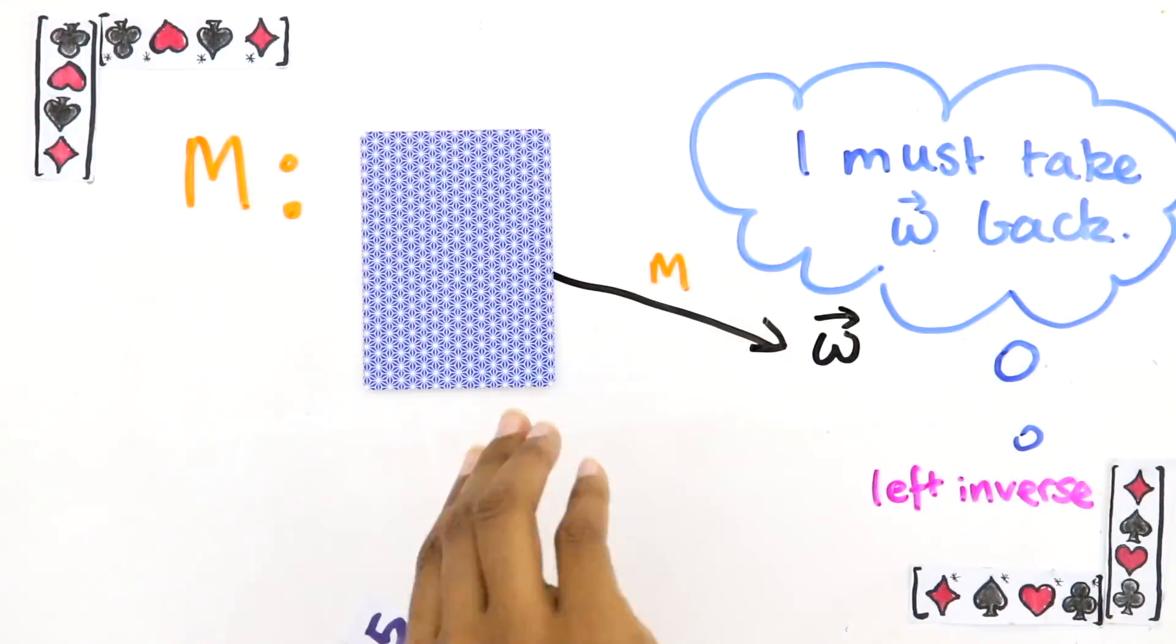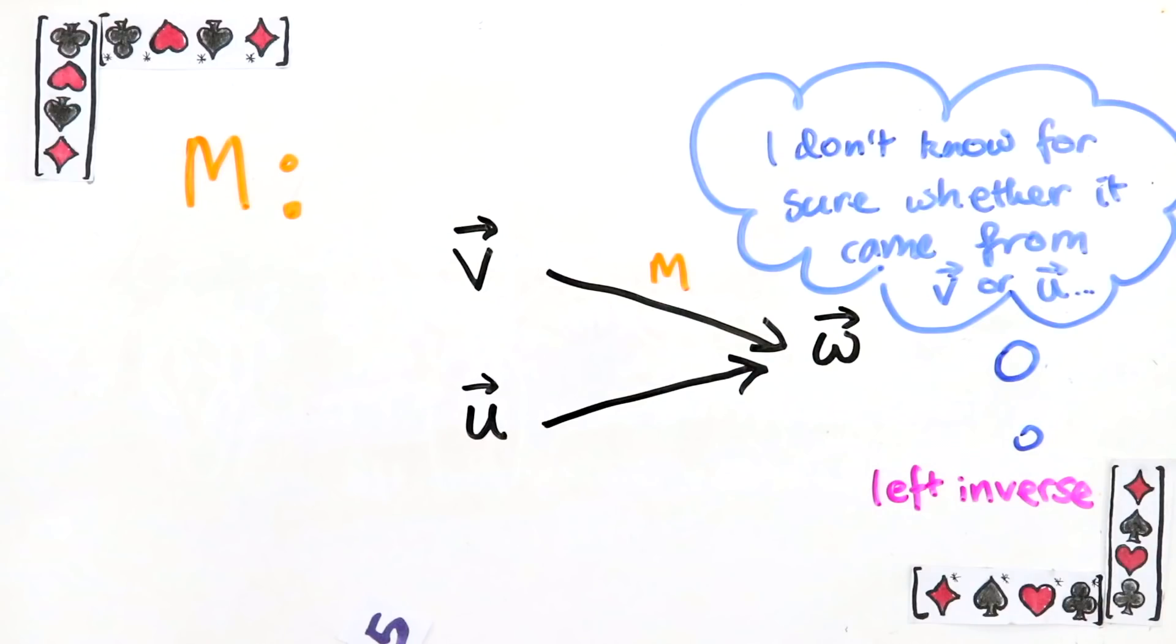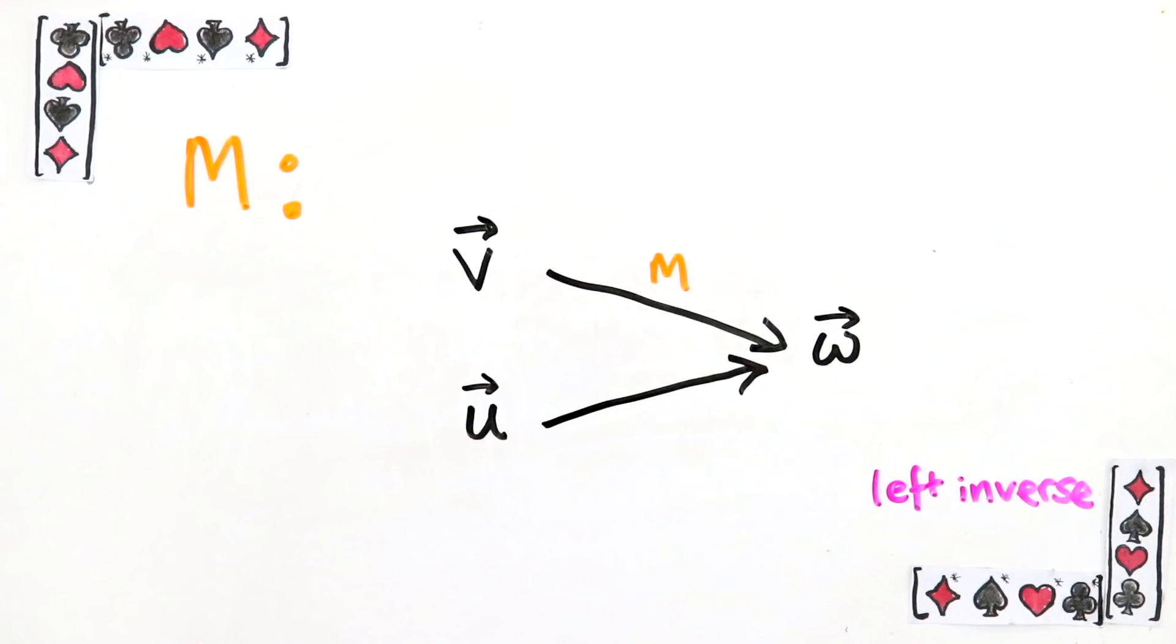However, if there's some other vector U that also goes to W, the left inverse has a problem. It can't just look at W and know for sure whether it came from V or U because there isn't enough information. This means that the left inverse can't take W back where it came from. And so it doesn't exist.